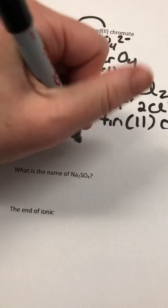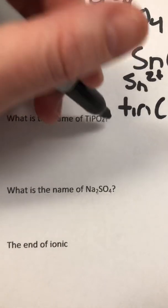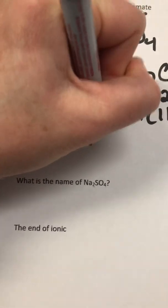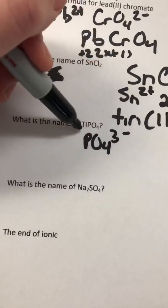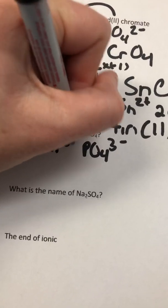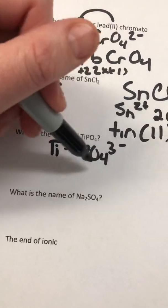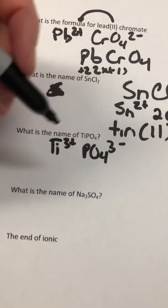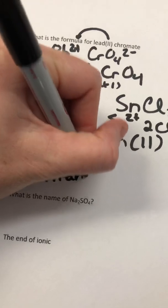Next: titanium phosphate. We have titanium bound to PO4, which is phosphate with a three-minus charge. In order for that three-minus to cancel, titanium has to be three-positive — there's no other choice with one of each. One phosphate is three-negative, so titanium must be three-positive. That is why this compound is titanium(III) phosphate.